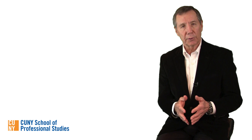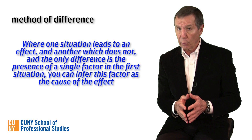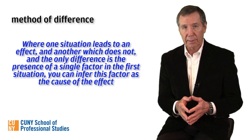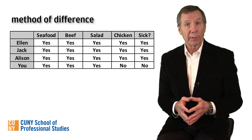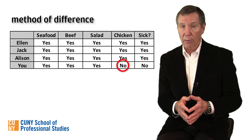Let's use a variant of our first table to illustrate Mill's second approach, the method of difference. It says that where you have one situation that leads to an effect and another which does not, and the only difference is the presence of a single factor in the first situation, you can infer this factor as the cause of the effect. As you can see, nearly everybody ate everything with one exception—you didn't eat the chicken. They got sick; you did not. So it's clearly the differentiating factor. The chicken is very probably the cause of your friend's nausea.